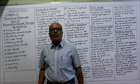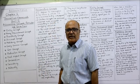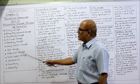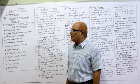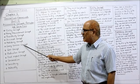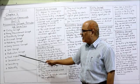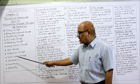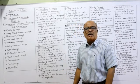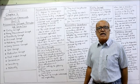The accounting concepts I am going to explain in this chapter are: entity concept, business entity concept, money measurement concept, periodicity concept, accrual concept, matching concept, going concern concept, cost concept, realization concept, dual aspect concept, conservatism, consistency, and materiality. These are the concepts and conventions I am going to explain.